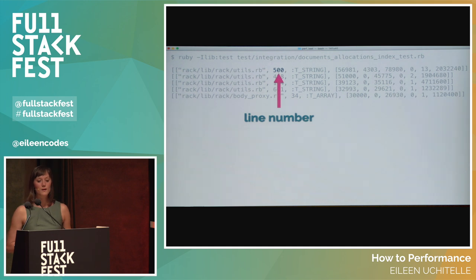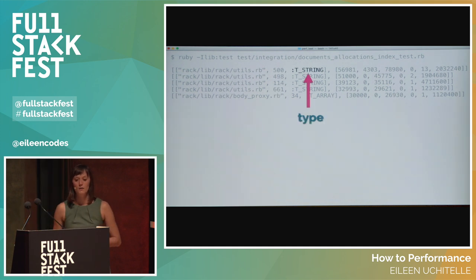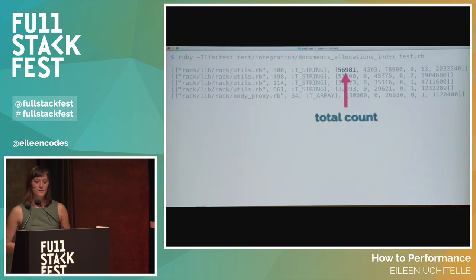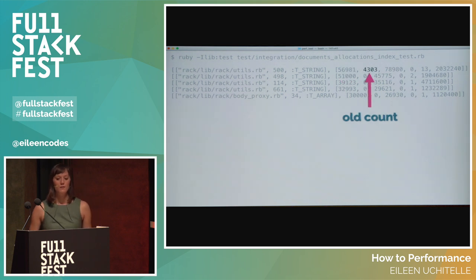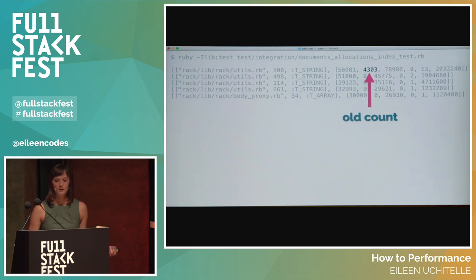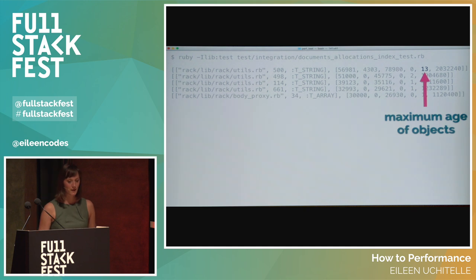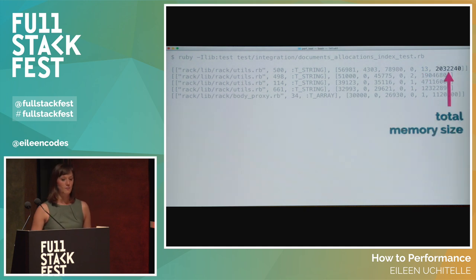The output shows us the path to the file that allocated the objects, the line number where the objects were allocated, and the type of object that was allocated — this can be a string, array, struct, hash, et cetera. The next array gives us the total count of objects created, the old count of objects which are objects that haven't been garbage collected yet, the total age of the objects, the minimum age, the maximum age, and the total memory size.